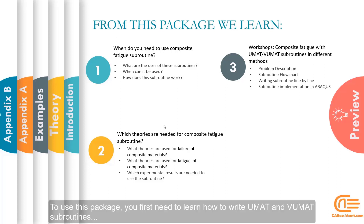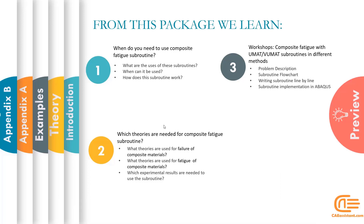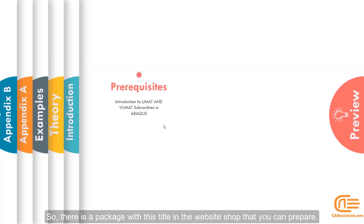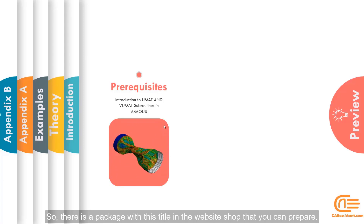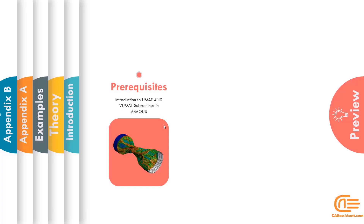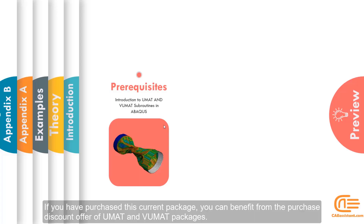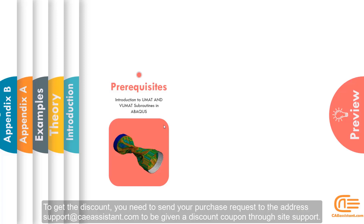To use this package, you first need to learn how to write UMAT and VUMAT subroutines. There is a package with the slide tool in the website shop that you can prepare. If you have purchased this current package, you can benefit from the purchase discount offer of UMAT and VUMAT packages. To get a discount, you need to send your purchase request to the address to be given a discount coupon through site support.